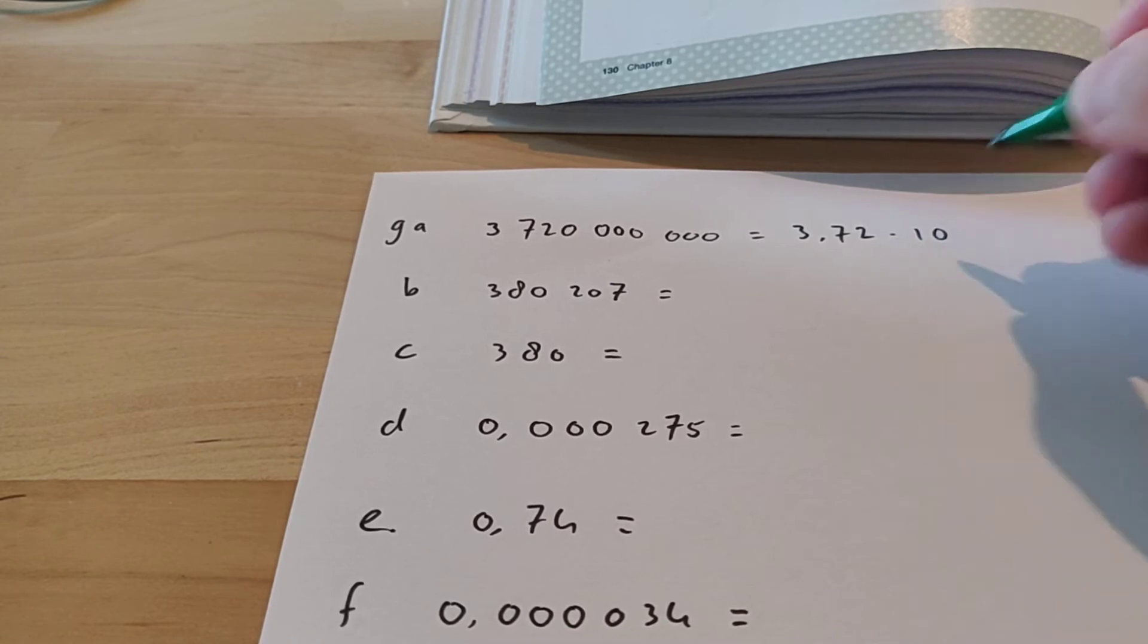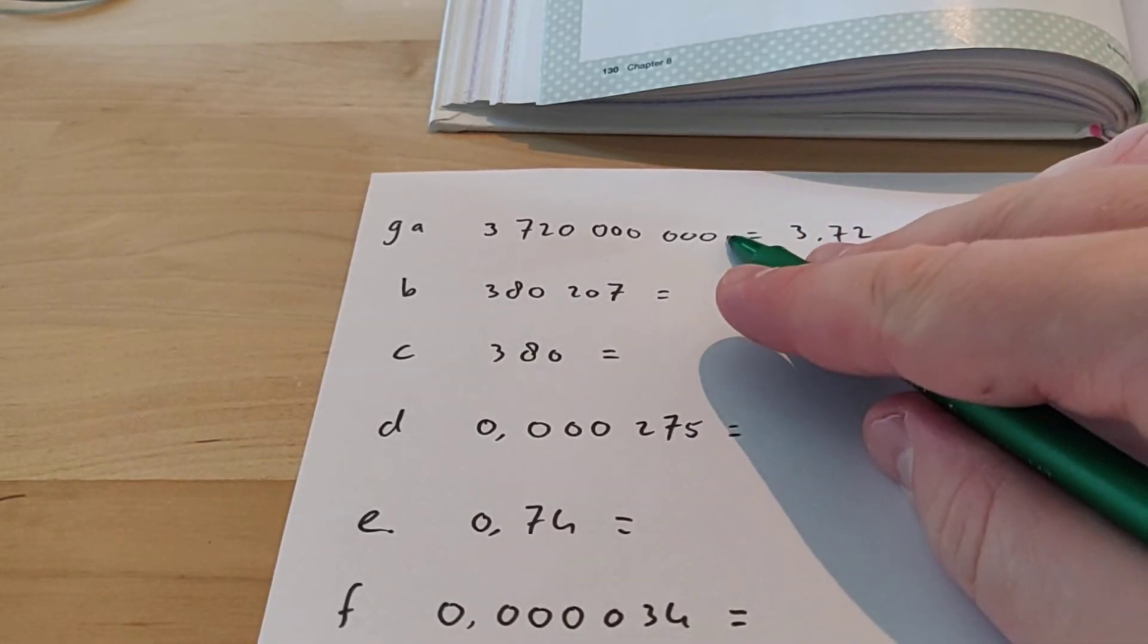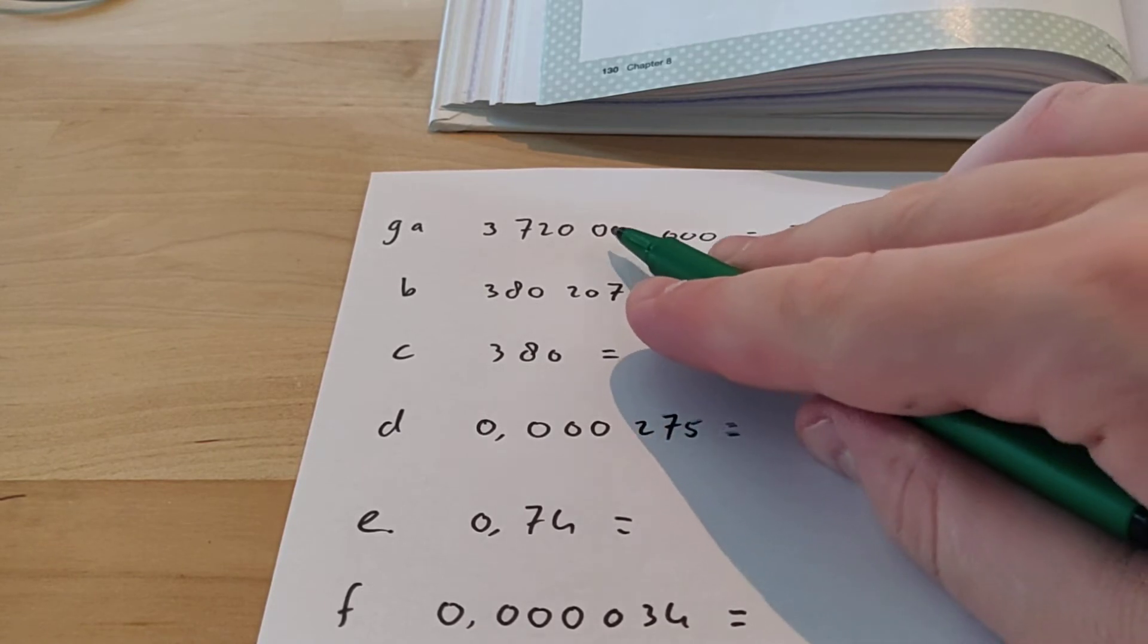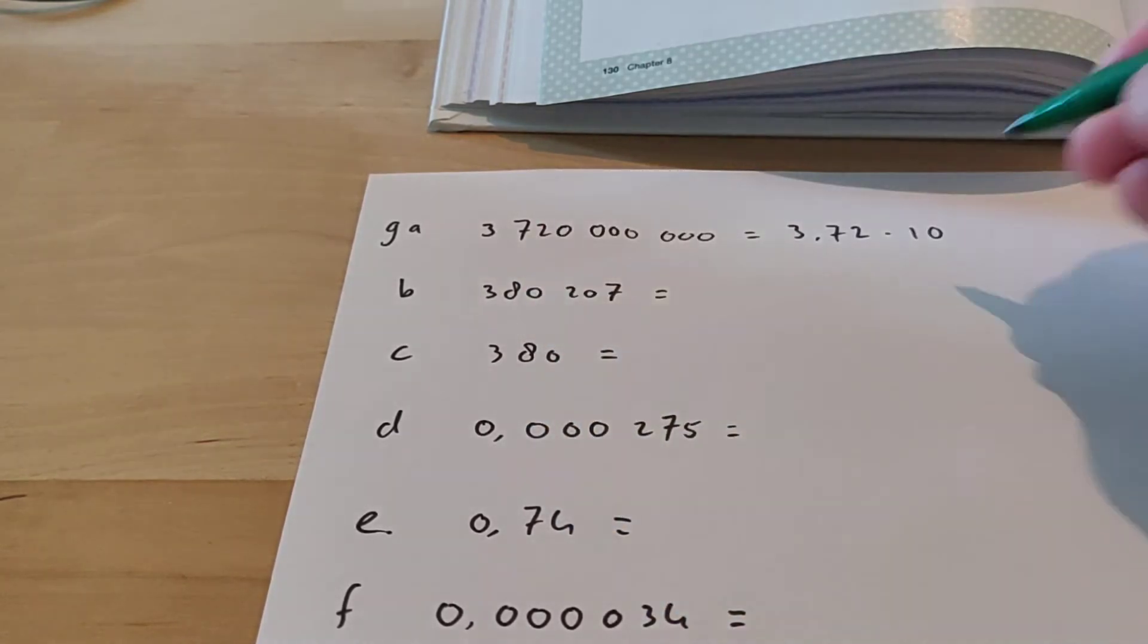And then times 10 to the power of, and then the point was here, and we want the point to be there. So we're going to count 1, 2, 3, 4, 5, 6, 7, 8, 9. So here, this is what I told you earlier about, this power is going to be positive.